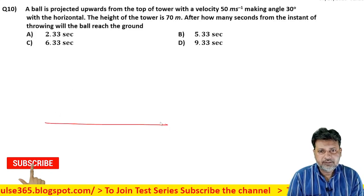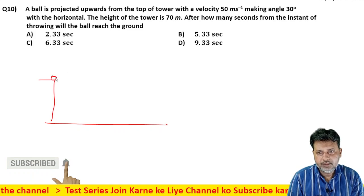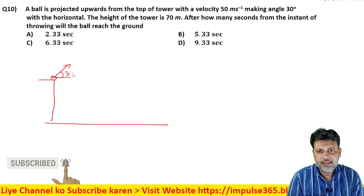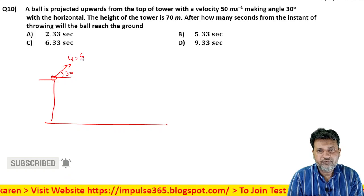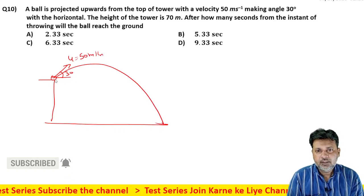Thik hai, pehle figure banana hai. Ye ek tower hai. Yahan se ball throw ki gayi, horizontal ke saath 30 degree angle banaate huye. Initial velocity hai 50 meter per second. Ye ball aise jayi, ye aise giri hai.